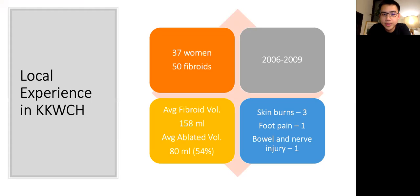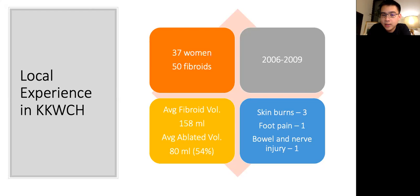Our local experience at KK Hospital: we have ablated 50 fibroids in 37 women. The average fibroid volume is 158 milliliters, and at each ablation about 54% on average of the fibroid was ablated. Complications were seen in four cases out of 50 — three with skin burns, one with foot pain, and one with bowel and nerve injury.